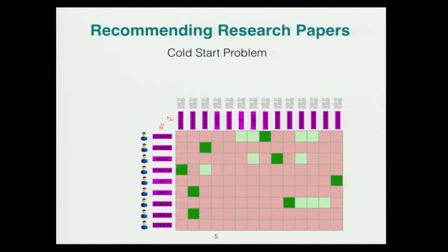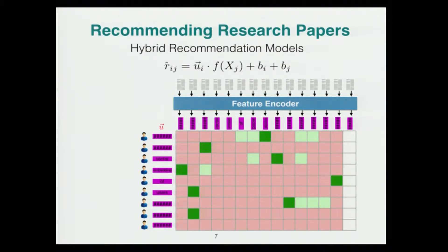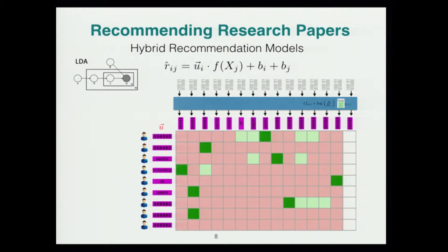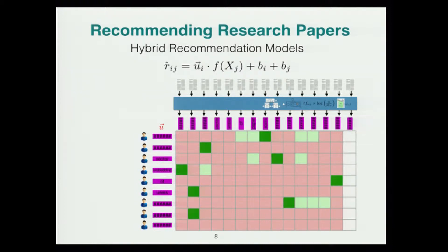A problem in these recommendation systems is cold start, which happens when there's a new paper in the system with no likes — corresponding to an empty column — and consequently no vector embedding for that paper. One way to tackle this is to have a feature encoder which takes a document as input and produces a vector embedding. For example, you might extract bag of words features, TF-IDF feature vectors, or LDA-based topics from the paper text, or combine all these features in a regression-based latent factor model.